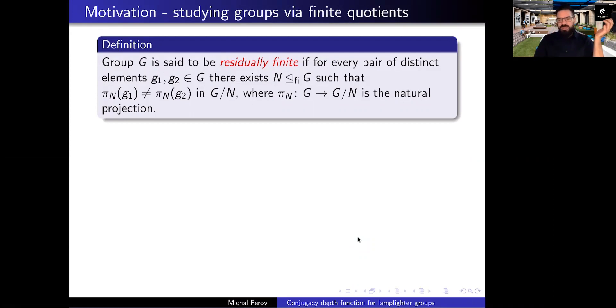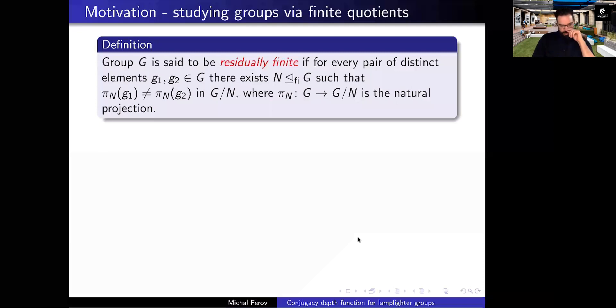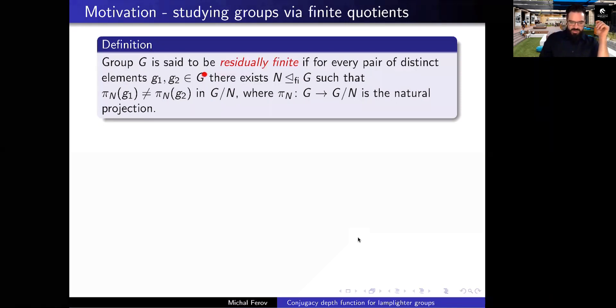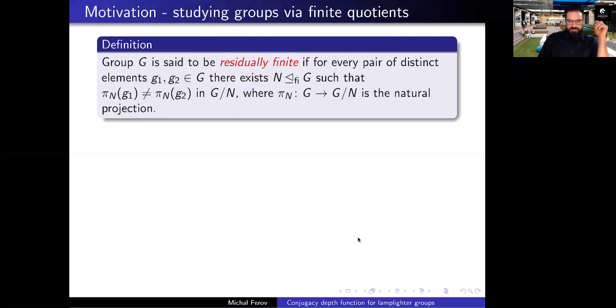So a bit of motivation. The idea is that you might want to try to understand an infinite object by approximating it homomorphically by finite objects. If you've ever seen me give a talk, usually you should remember that I'm that guy that keeps rambling about the residual properties of groups, and this will not be different.